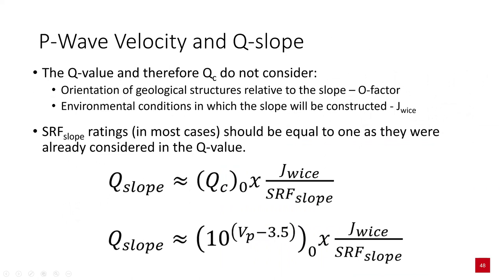P-wave velocity and Q-slope: the Q-value, and therefore Qc, does not consider the orientation of geological structures relative to the slope — which is accounted for by the O-factor in Q-slope — nor the environmental conditions in which the slope is constructed, or J-wise. Also, the slope SRF ratings in most cases should be equal to 1, as they were already considered in the Q-value. So Q-slope is approximated by Qc normalised by the O-factors and J-wise, divided by SRF slope. Alternatively, by replacing Qc with 10 to the power of (Vp minus 3.5).